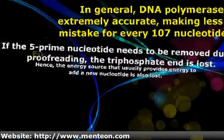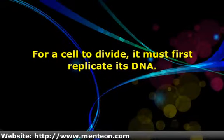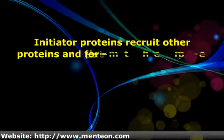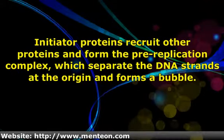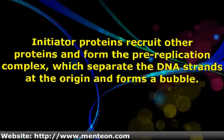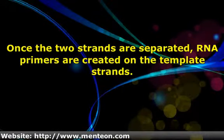For a cell to divide, it must first replicate its DNA. Initiator proteins recruit other proteins and form the pre-replication complex, which separates the DNA strands at the origin and forms a bubble. Once the two strands are separated, RNA primers are created on the template strands.